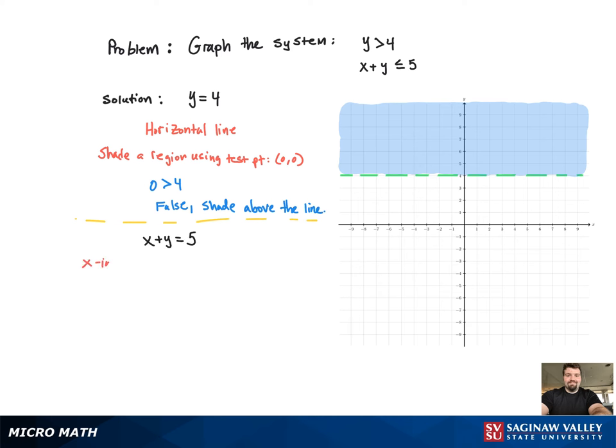Now, moving on to the second inequality. Again, switch it to an equation and graph the line. To do that, we need two points. Two easy points to find are the x and y intercepts. So when we go through that process, we're going to get the two points 5, 0 and 0, 5.